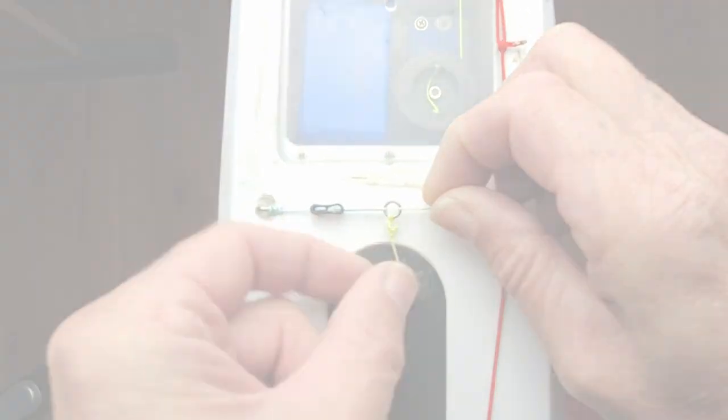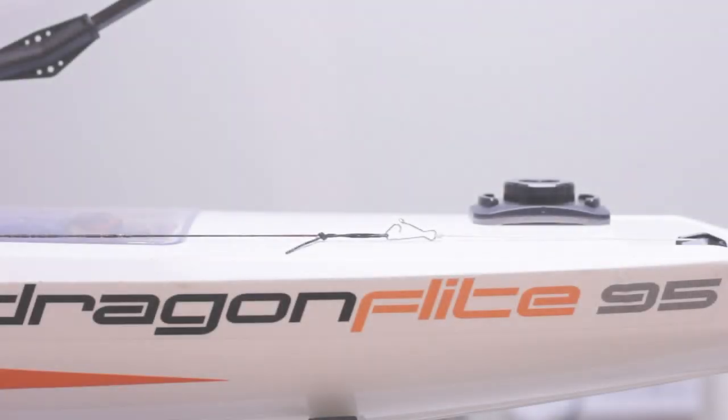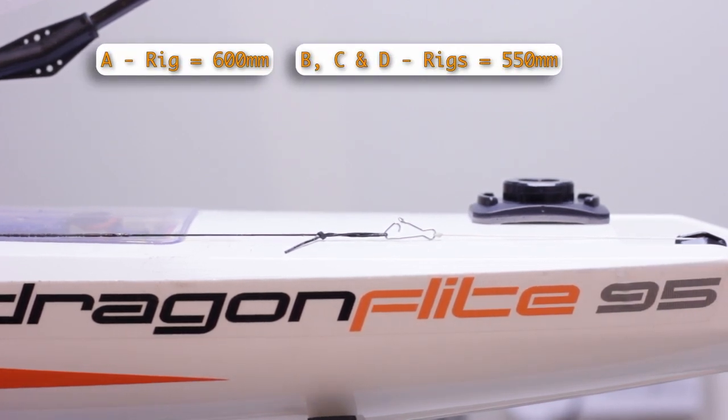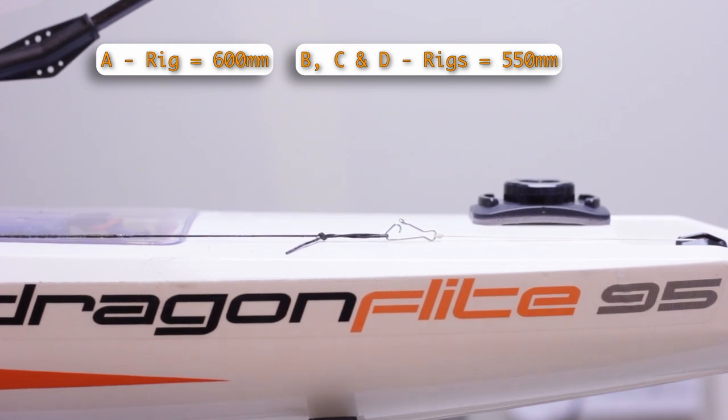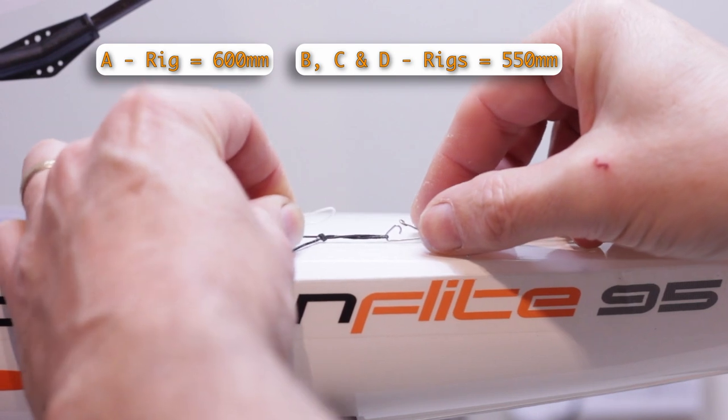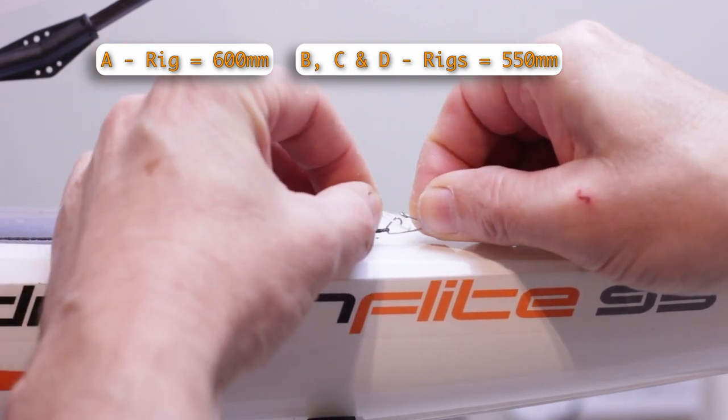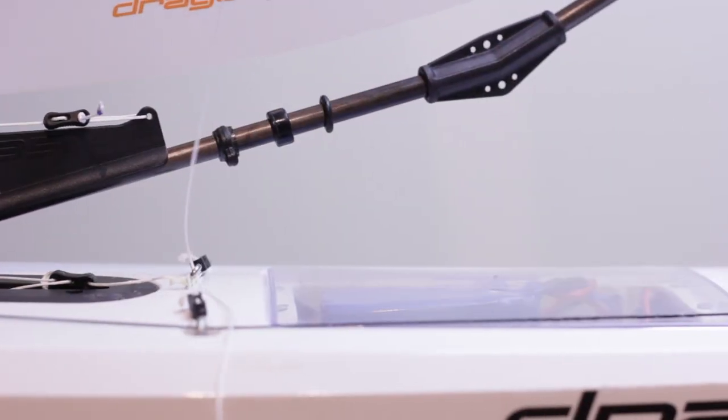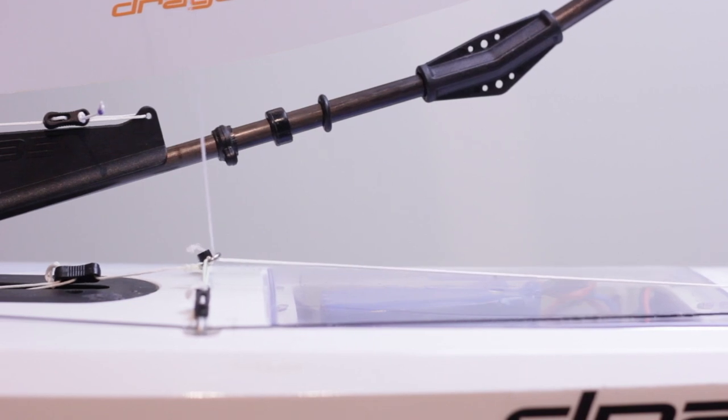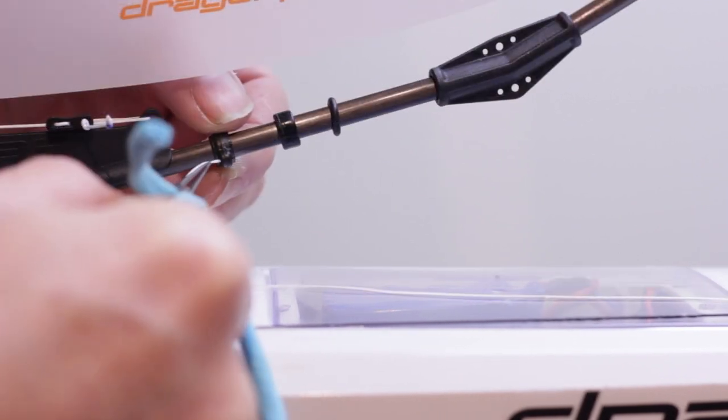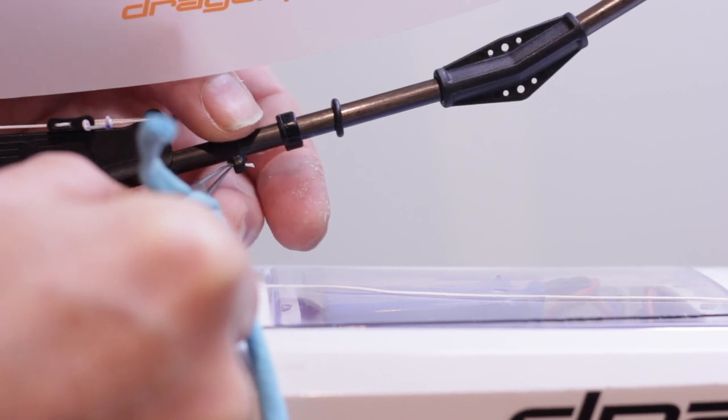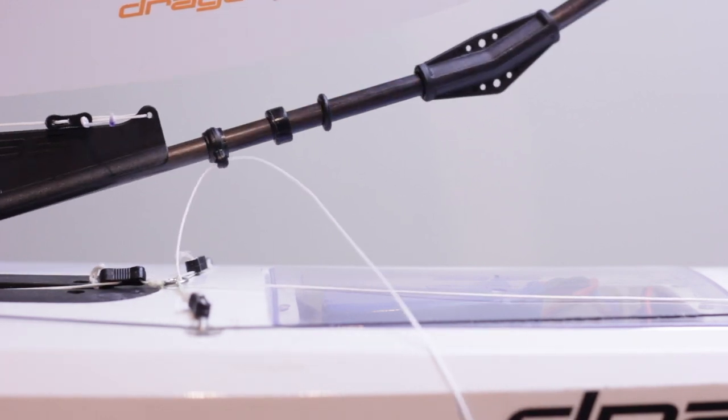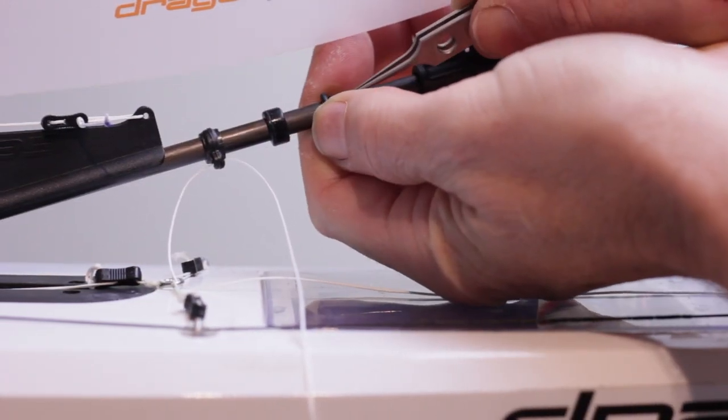Cut a length of dyneema for the rig size you are building. These are the dimensions. Tie a loop in one end, and this loop will go in the winch clip. Run the other end through the mainsheet bridle and up through the small hole in the sheet lead. Now pass the end over the boom band and through the silicon o-ring.